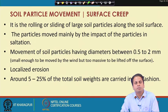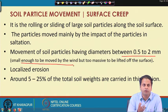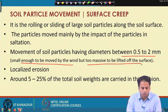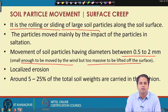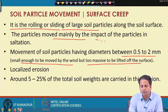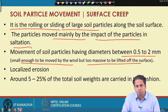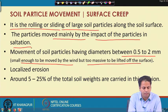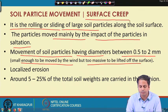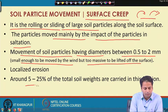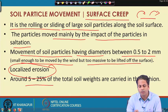Surface creep is applicable to larger particles of size 0.5 to 2 mm. Since these particles cannot be lifted by wind, they are rolled or slid along the soil surface. This movement is caused mainly by the impact of saltating particles. The saltating particles transfer their energy to these larger, heavier particles, causing them to roll along the surface in the direction of wind. Around 5 to 25 percent of the total soil weight is carried in this fashion, and it is localized erosion due to the mass of the particles.